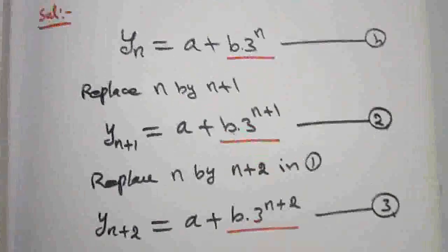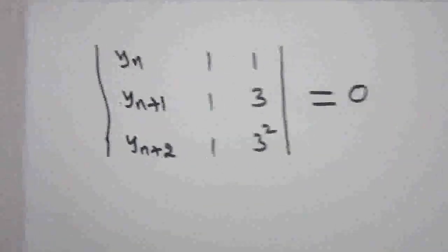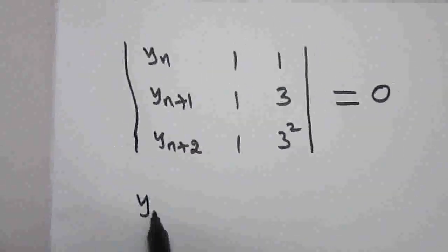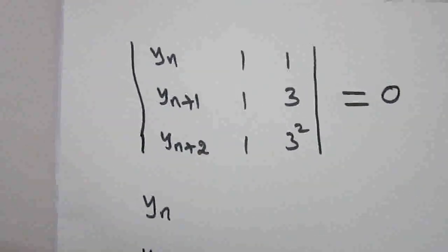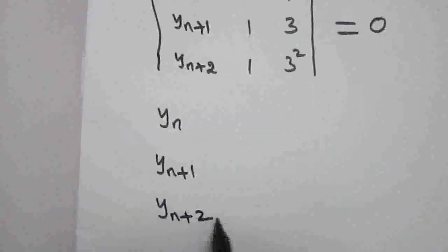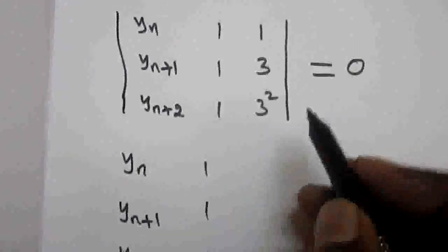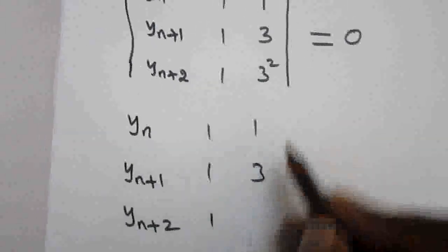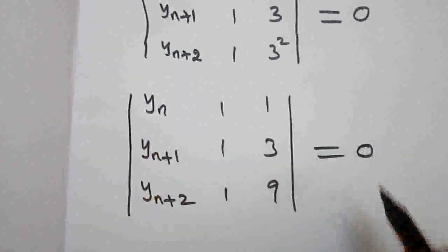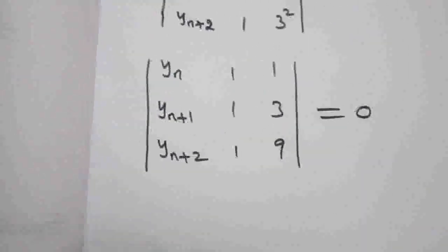From the three equations I formed a determinant by eliminating a and b, which gives: yn, y(n+1), y(n+2) in the first column; 1, 1, 1 in the second column; and 1, 3, 9 in the third column, all equal to 0. Now I am going to expand this determinant to get the difference equation.